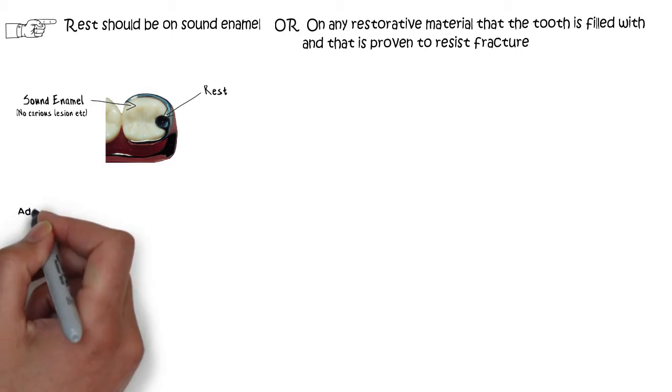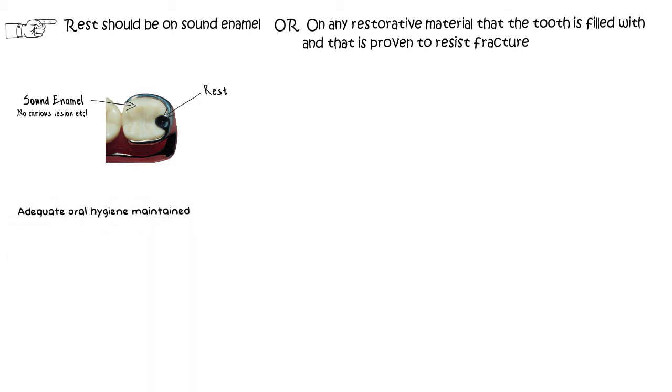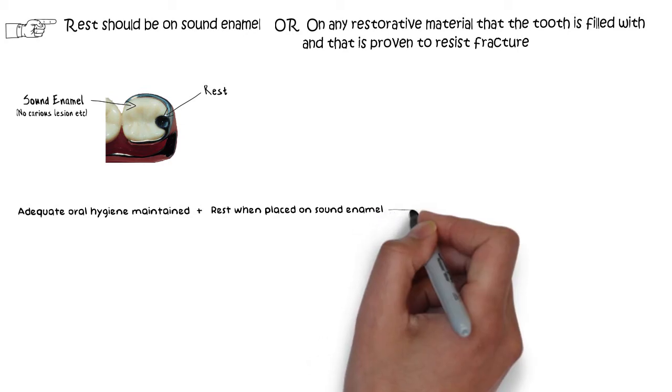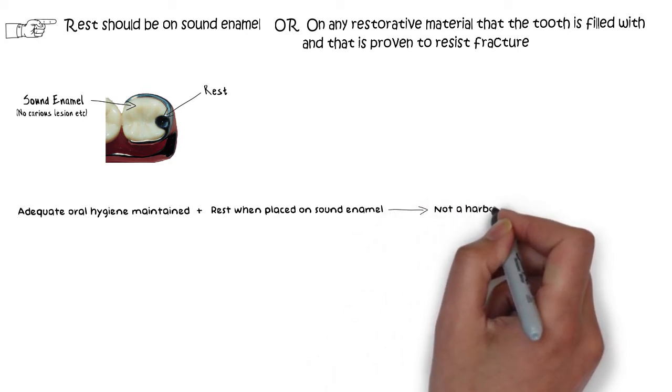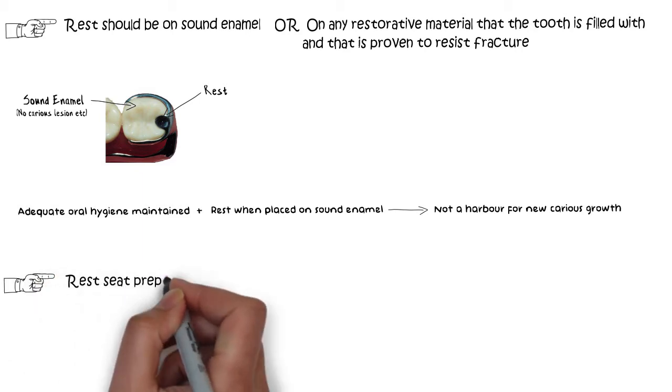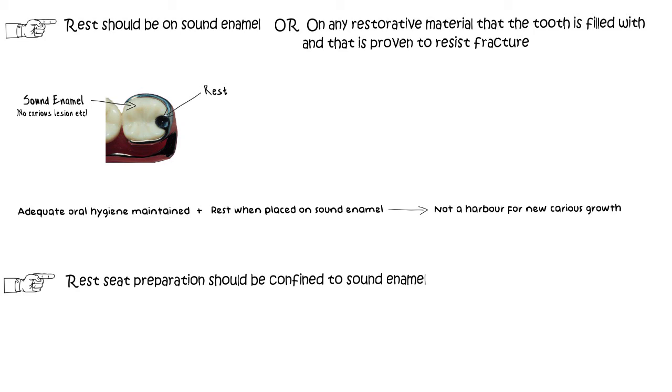Placing the rest on enamel is important because if adequate oral hygiene is maintained, then the rest when placed on sound enamel are not a harbor for new carious growth in the mouth, hence prolonging the life of the abutment and the denture. Likewise, rest seat preparation should also be on sound enamel in order to accommodate the metallic rests.